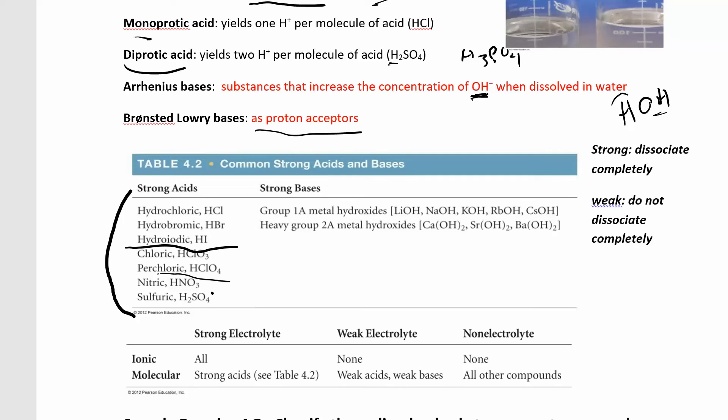So if you have an acid, you know it's an acid because it has a hydrogen out in front, and you remember that from chapter two when we were naming things. If it's on this list, it's strong. If it's not on this list, then it's weak.